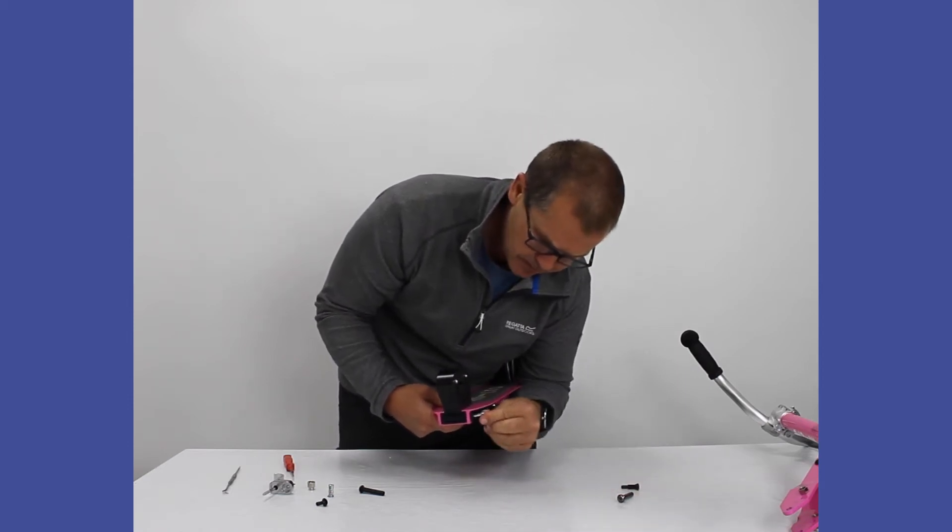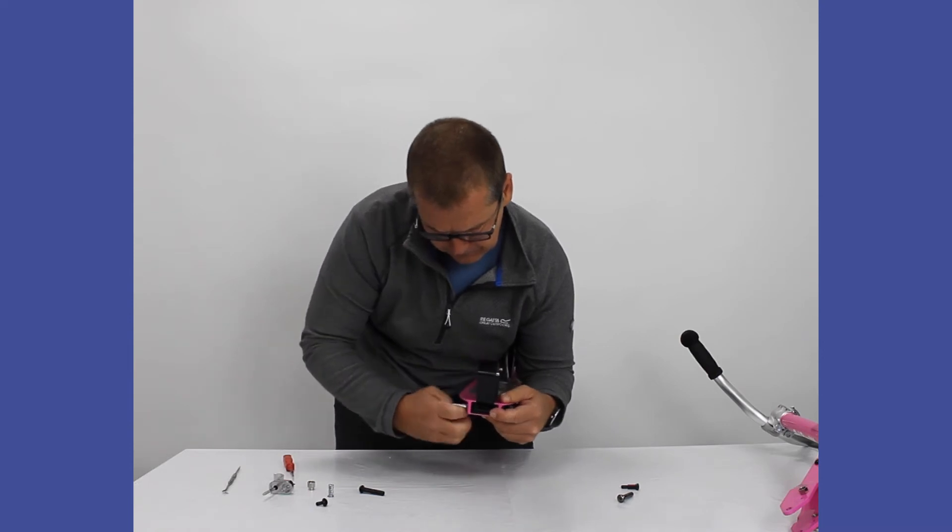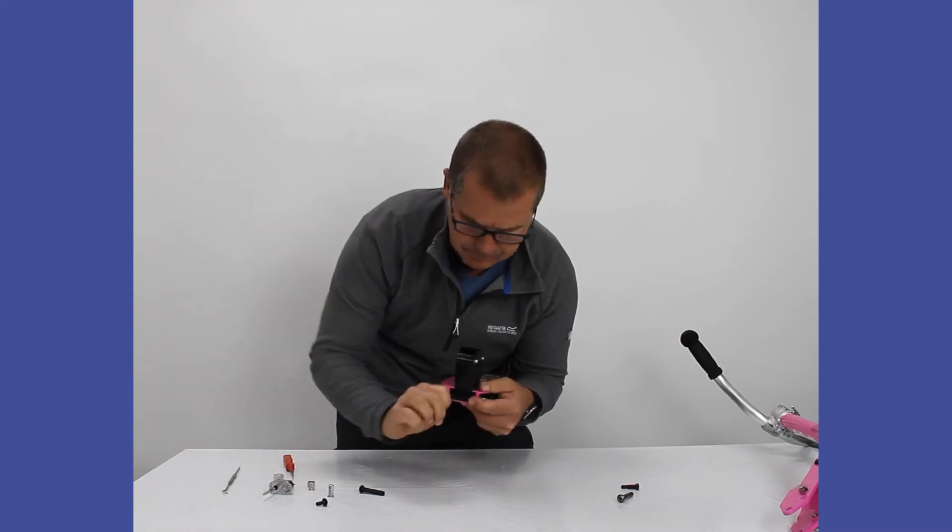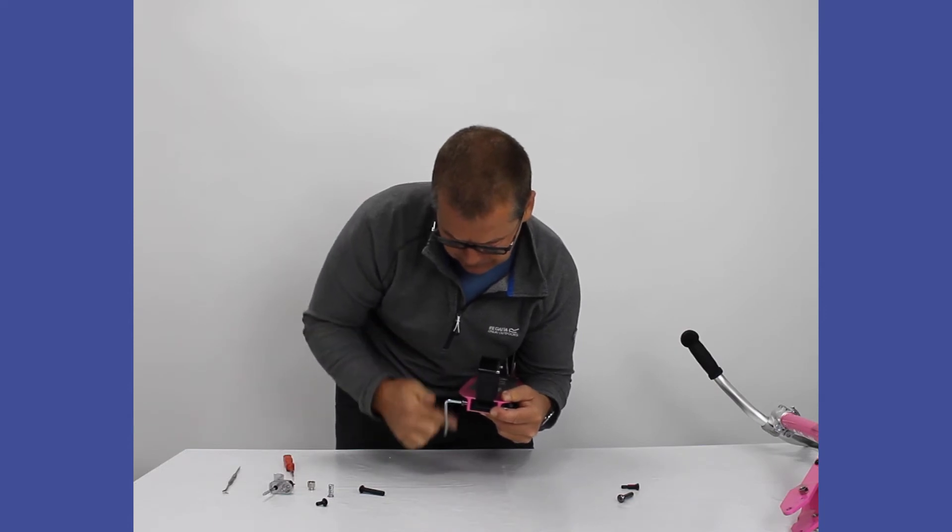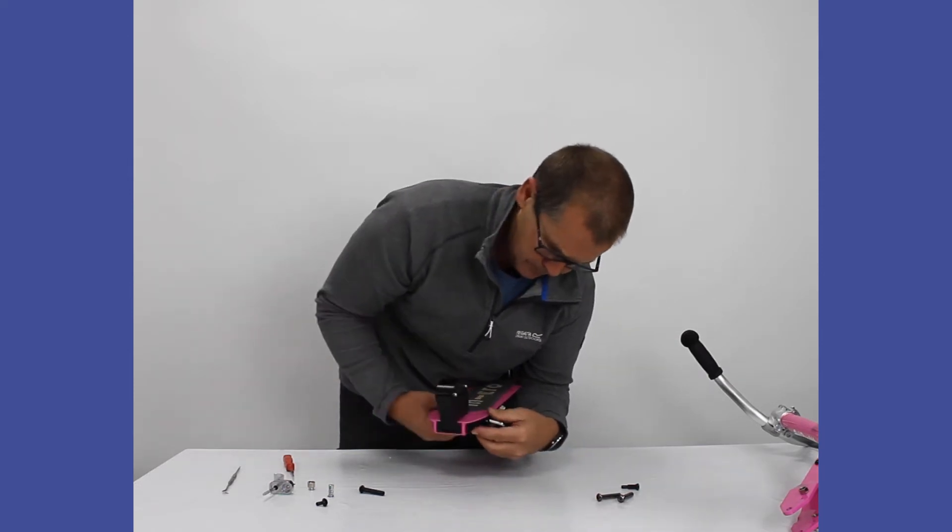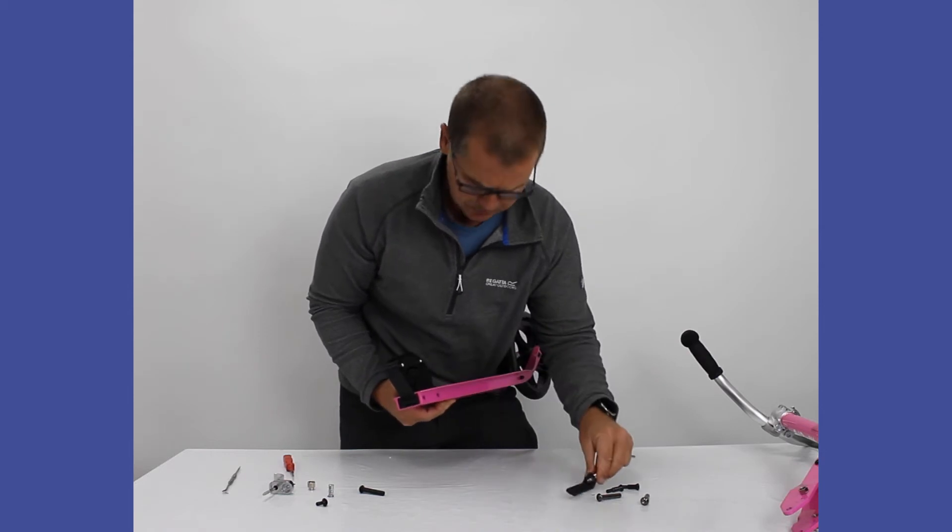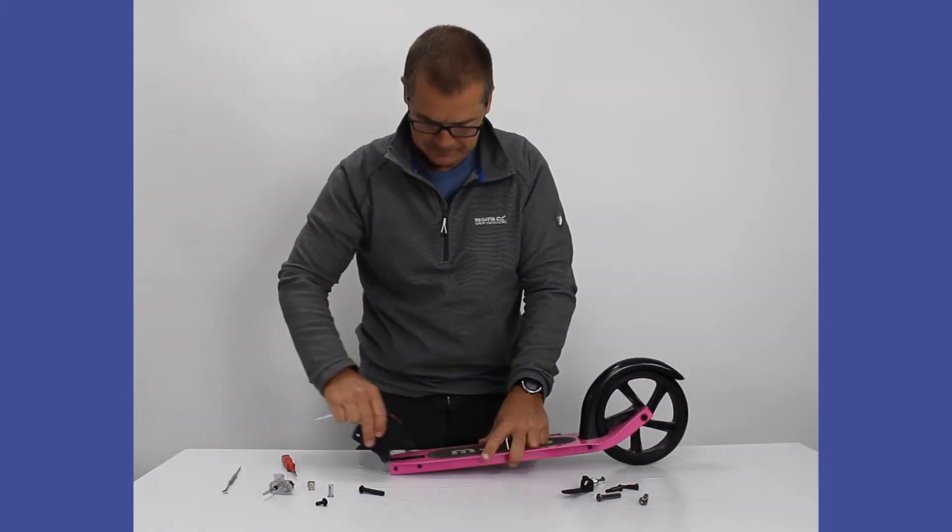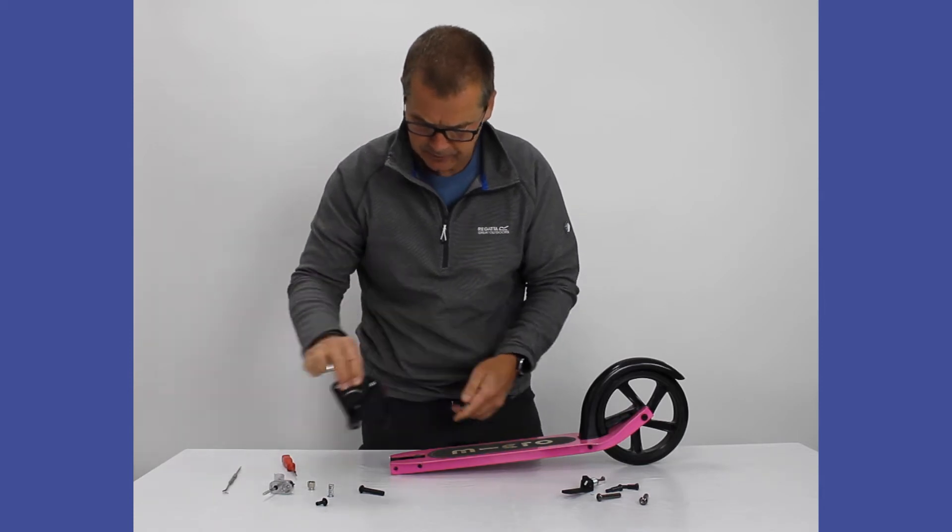Put them to one side, and then the front ones. There we go. And the kickstand then comes off with the bolts. That then should enable us to remove the folding block.